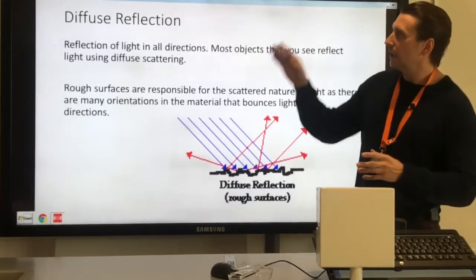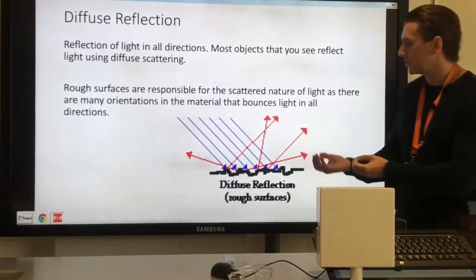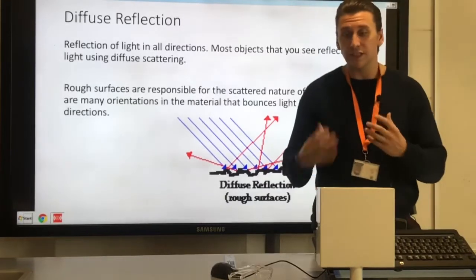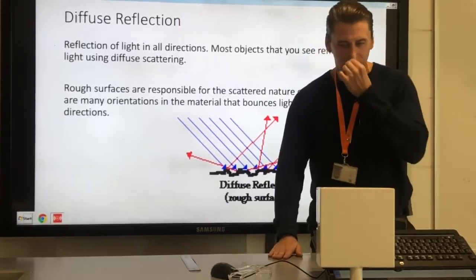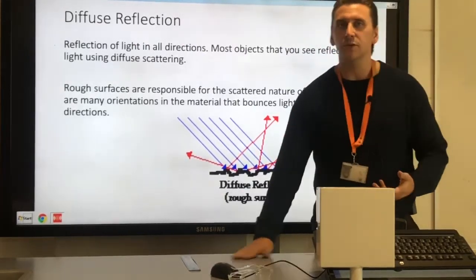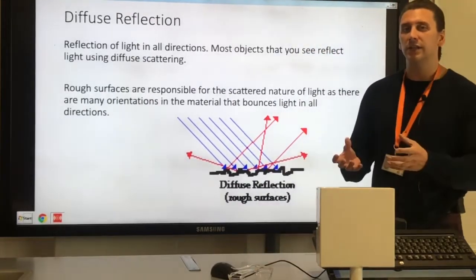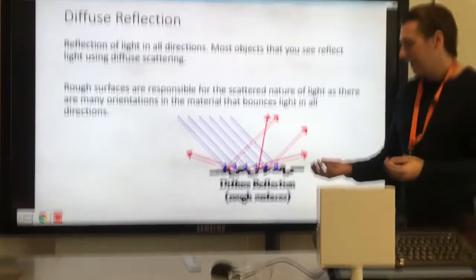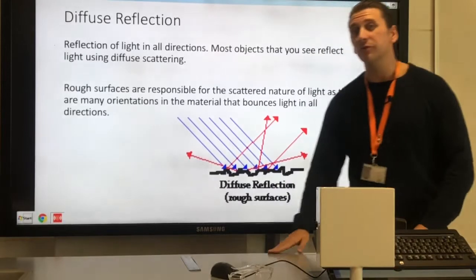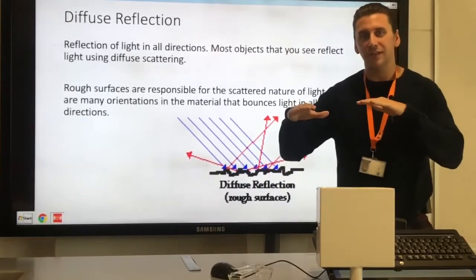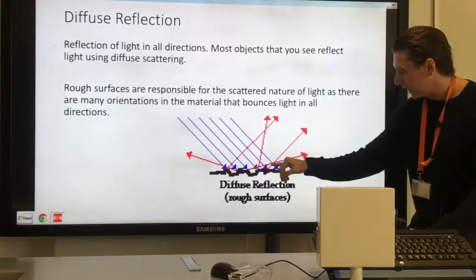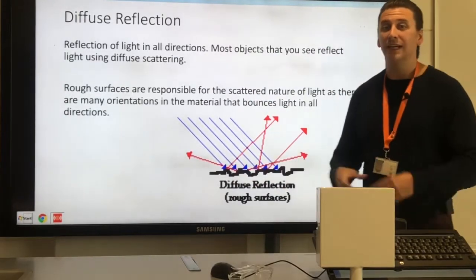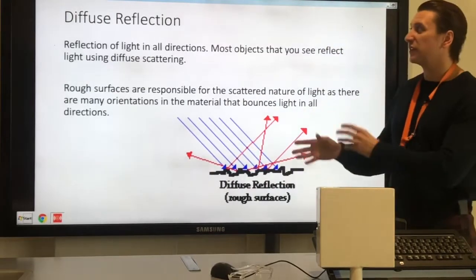The first type is known as diffuse reflection, which happens on surfaces that are rough. But you have to be careful — rough doesn't necessarily mean rough to us as we touch it. This table feels smooth to my hands, but to light, which is an incredibly small massless wave or particle, this surface is actually quite rough. If you zoomed in at the microscopic scale, what's smooth to our hand may actually be a rough surface to light rays.